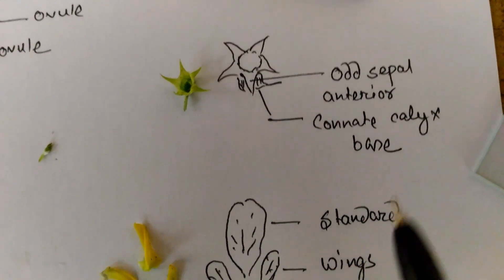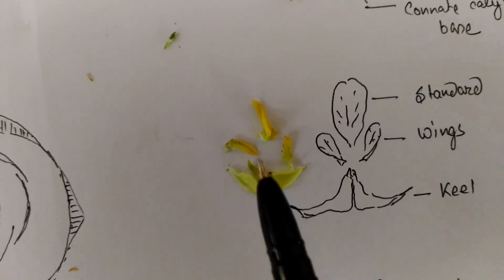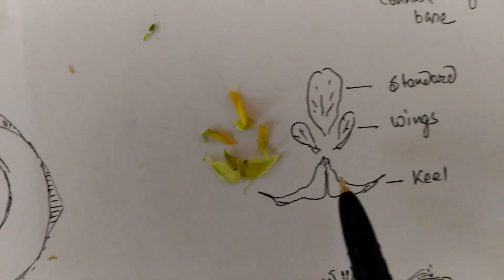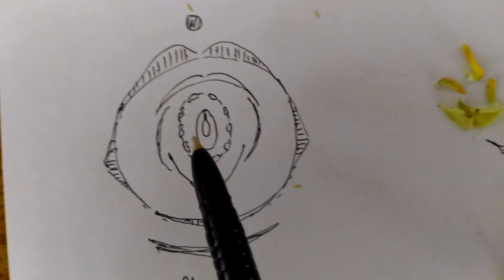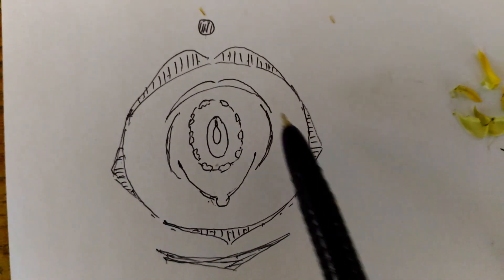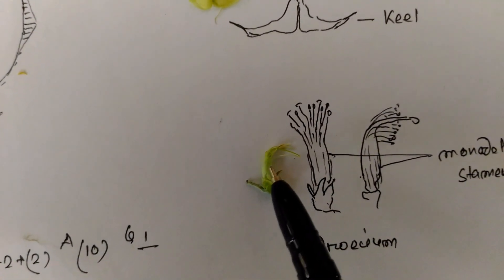These are the petals: standard, wings, and keel. This is papillionaceous. This is the floral diagram which represents the structure.